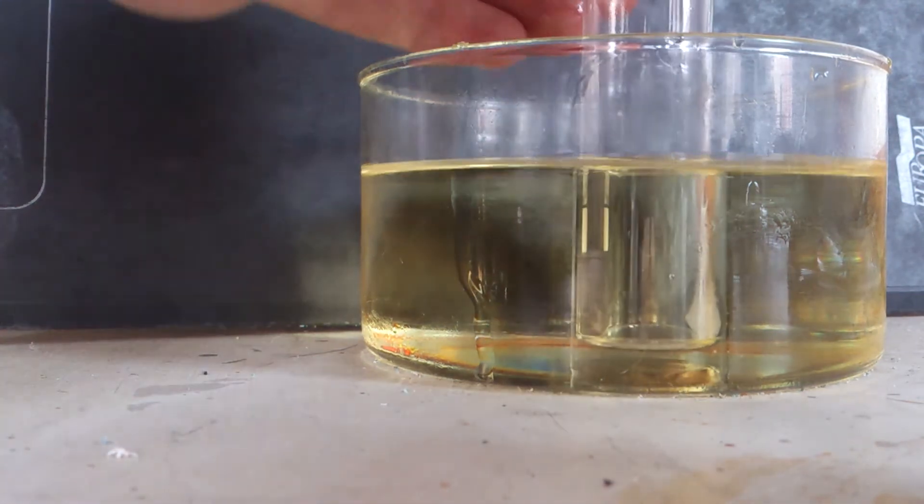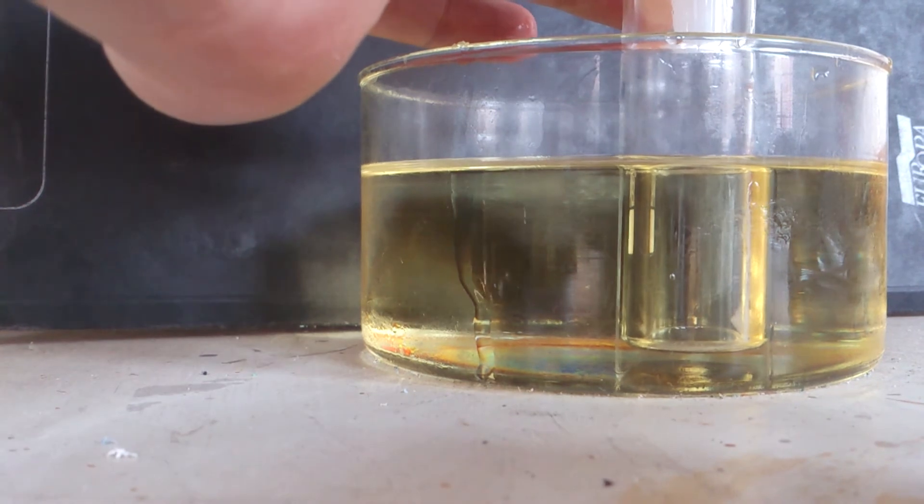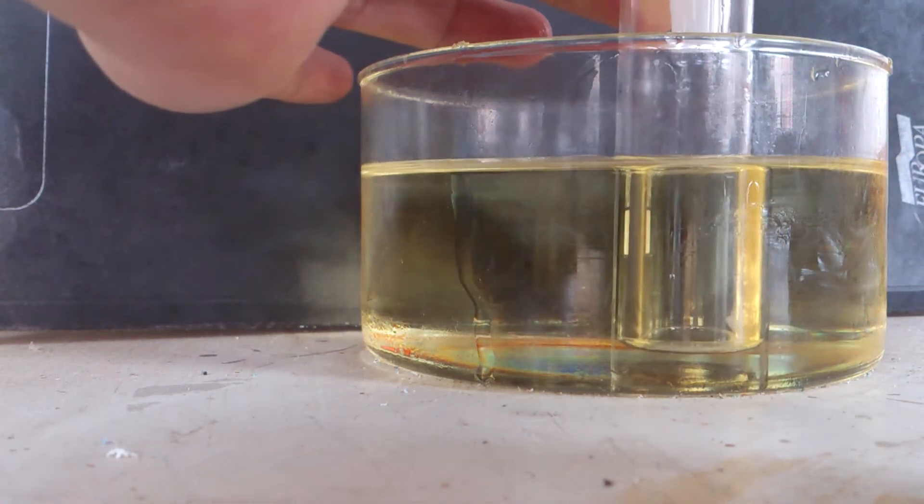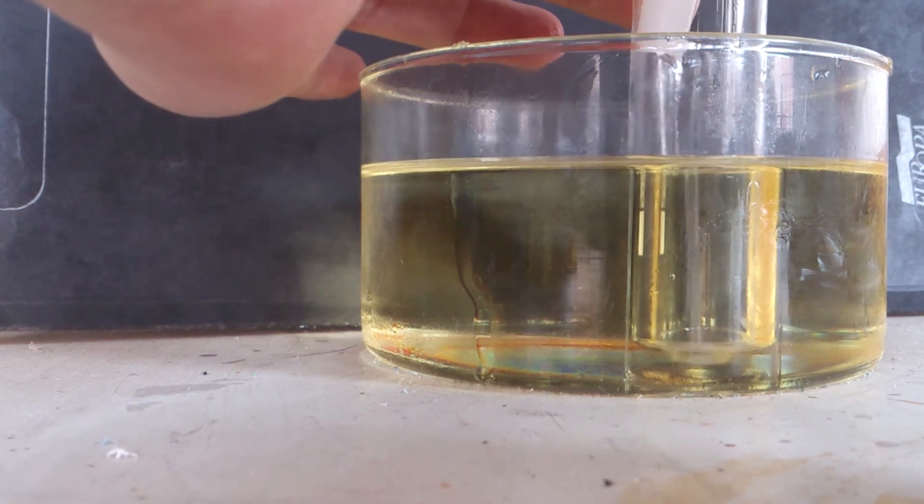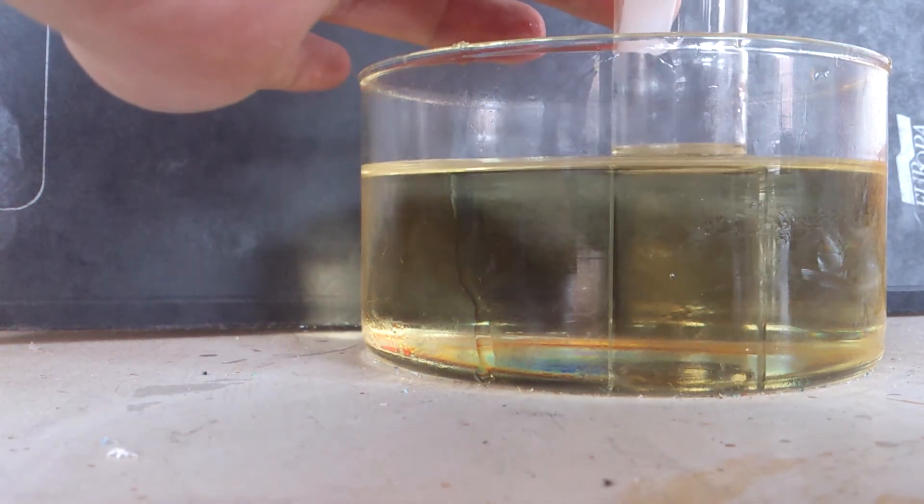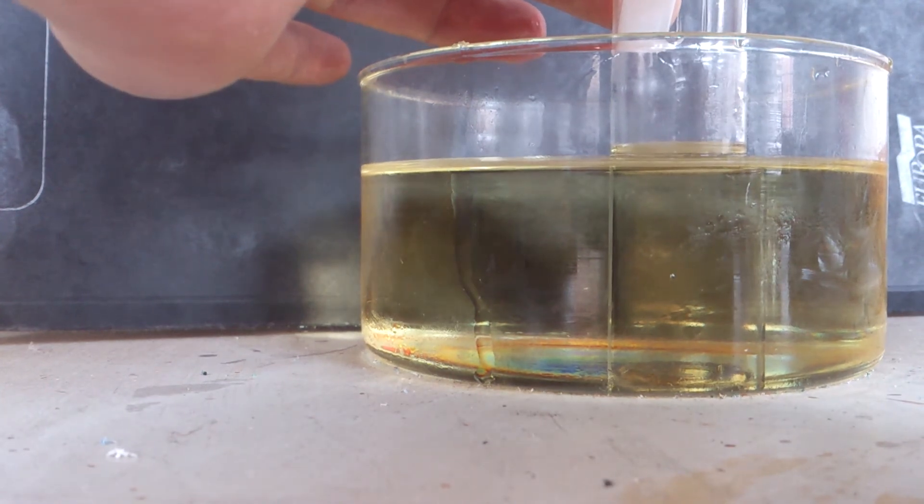So I'm going to take some of my sunflower oil and fill up the inside, and let's see what happens now. Hopefully you can see it's a lot harder for you to see. You can only just see the edge of the test tube.